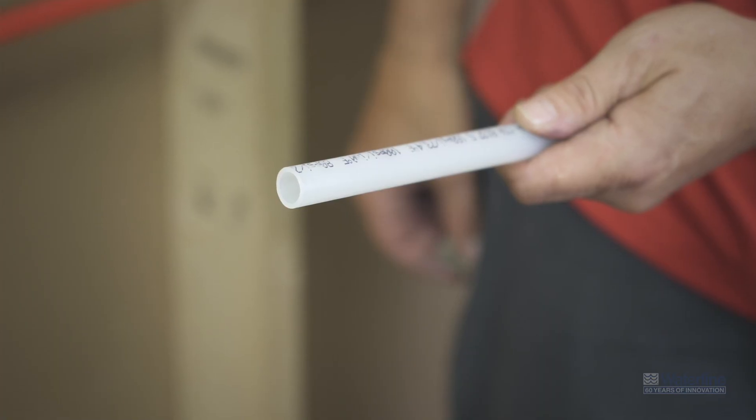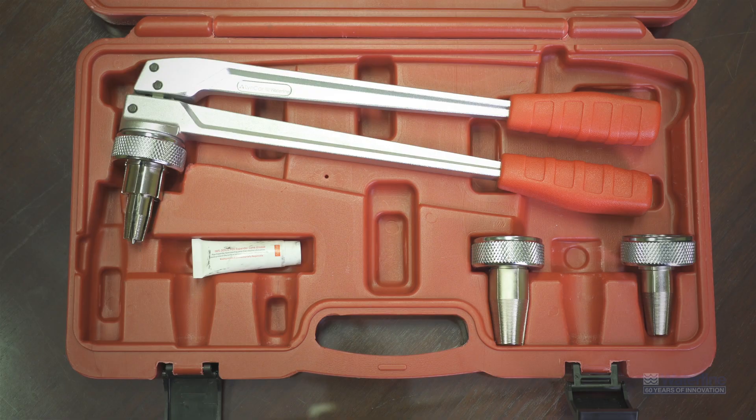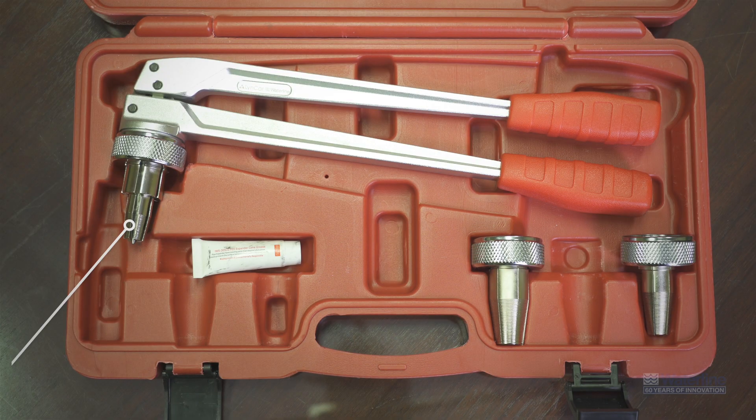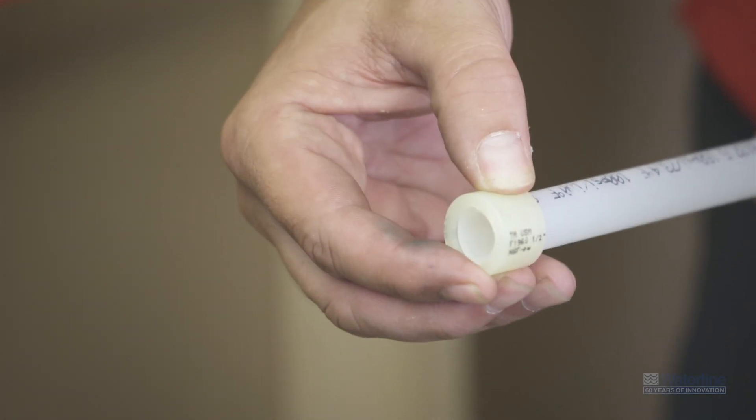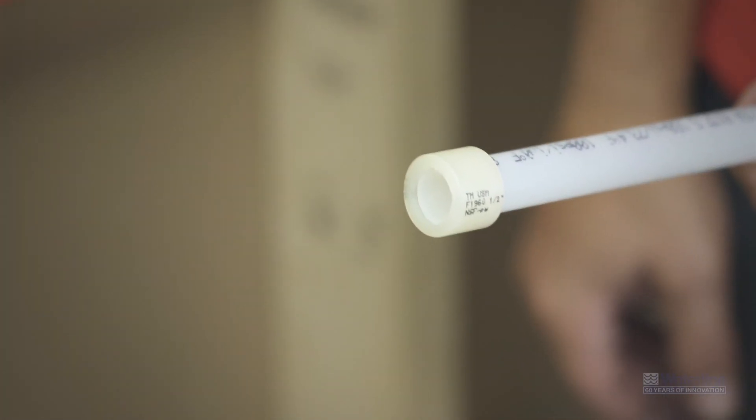Now that you've got everything, let's begin. First make sure that you lightly grease the cone of the expansion tool in order to ensure a smooth expansion. Then place a ColdX expansion ring onto the pipe as far as you can. There's a built-in stop on the ring so that you will know that it's in its place.